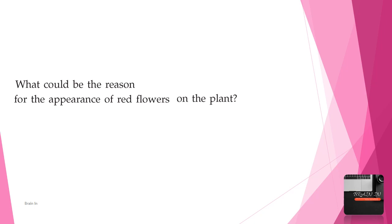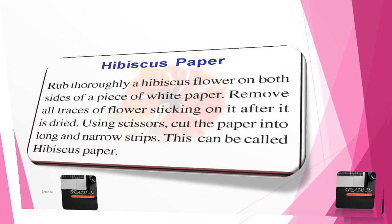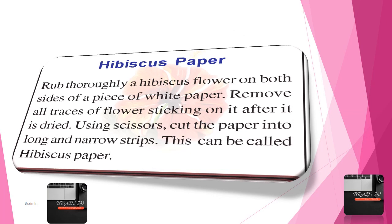What could be the reason for the appearance of red flowers on the plant? To make hibiscus paper, rub a hibiscus flower thoroughly on both sides of a piece of white paper. Remove all traces of flower sticking on it after it is dried. Using scissors, cut the paper into long and narrow strips. This can be called hibiscus paper.